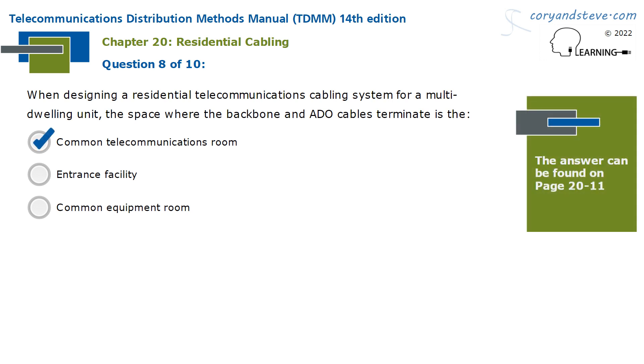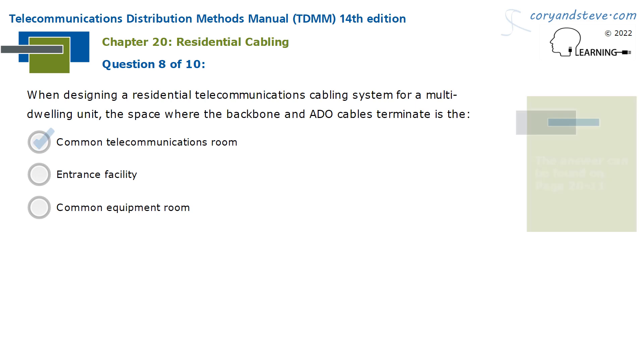When designing a residential telecommunications cabling system for a multi-dwelling unit, the space where the backbone and ADO cables terminate is the common telecommunications room.